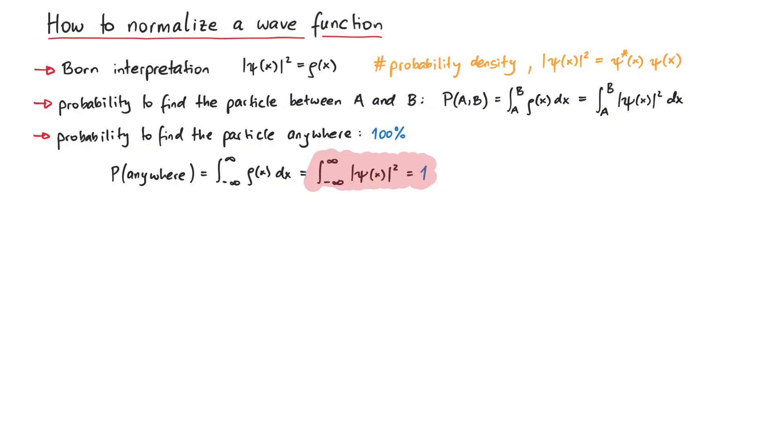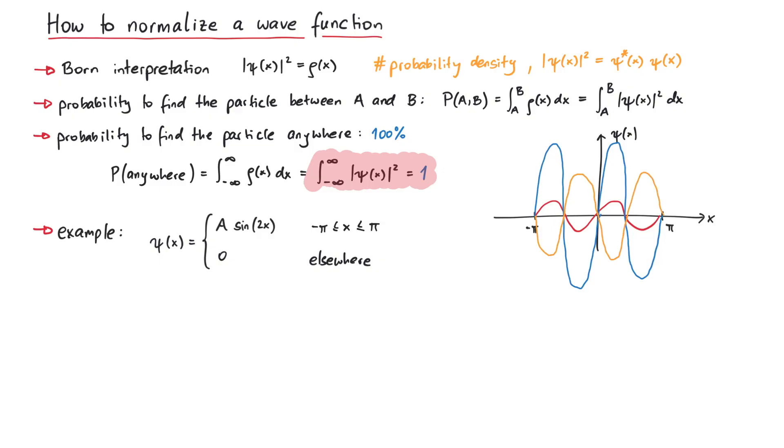Let's look at some examples to better understand the normalization of wavefunctions. First, consider this wavefunction. It is given by A times the sine of 2x, if x is between minus pi and pi. Everywhere else, the wavefunction is zero. This means the wavefunction might look something like this, depending on the size of A. But not all values of A lead to a normalized wavefunction.